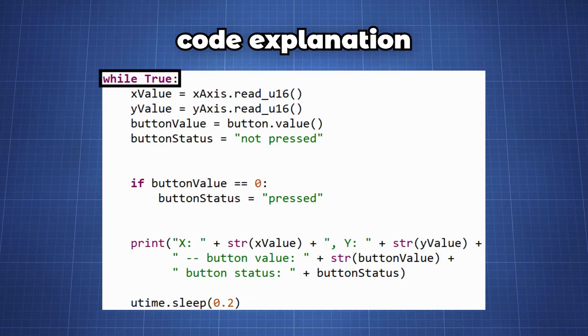Now create a continuous loop that checks and prints the x and y and button values. Here we create two variables x-value and y-value and we set them equal to the x-axis and y-axis and read the ADC value with the read_u16 function.